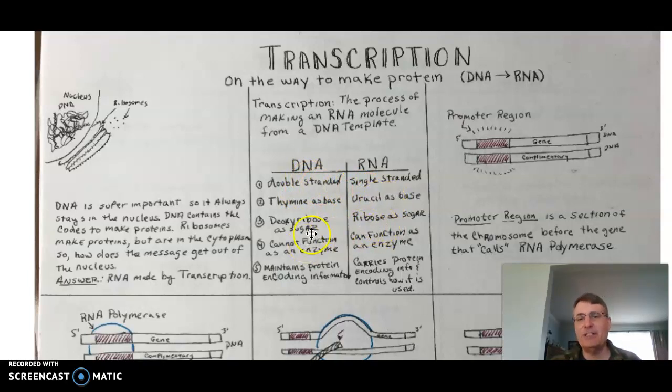Sugars are different: deoxyribose in DNA, ribose in RNA. RNA can function as an enzyme. We'll talk more about that when we get into making protein, but that's where it will function as an enzyme.